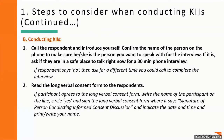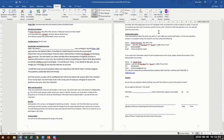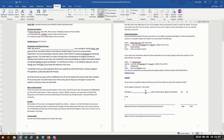When conducting KIIs, call the respondent and introduce yourself. Confirm the name of the person on the phone to make sure that he or she is the person you want to speak with for the interview. Ask if they are in a safe place to talk right now for a 30-minute phone interview. If respondents say no, ask for a different time you could call to complete the interview. Read the long verbal consent form to the respondent. If participants agree, fill in the name of the participant and circle yes, and the enumerator can sign and indicate the date and time.